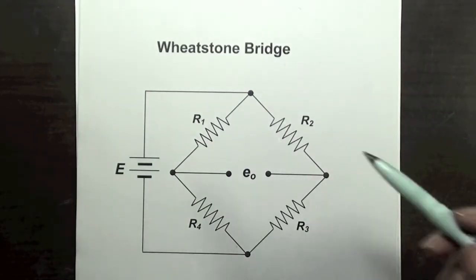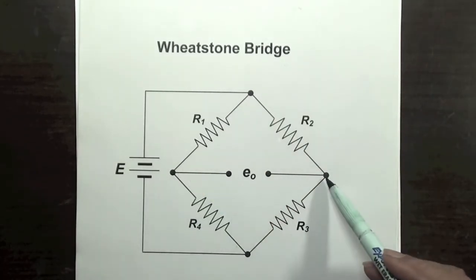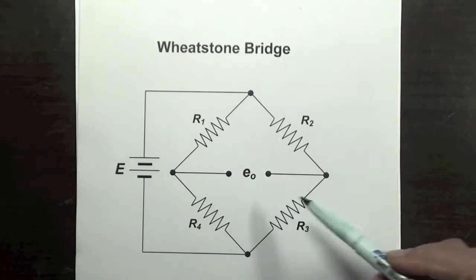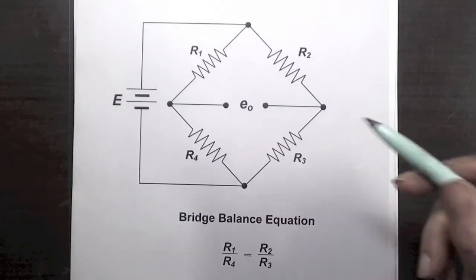Across one pair of diagonal corners an excitation voltage is applied, and across the other pair of diagonal corners the output of the bridge is measured, designated as E output. This is the basic Wheatstone bridge.